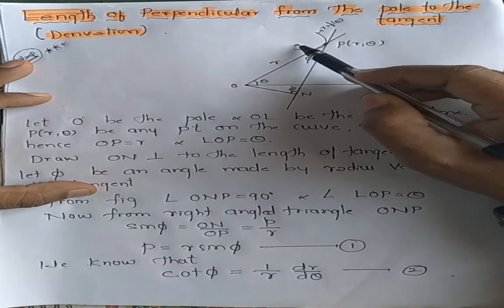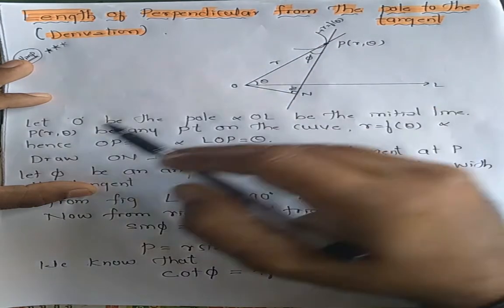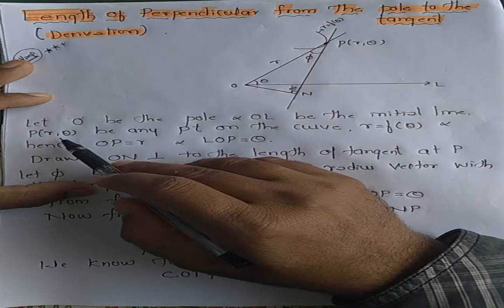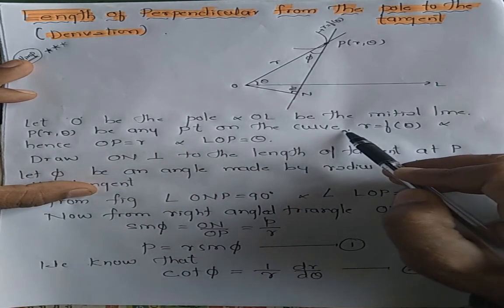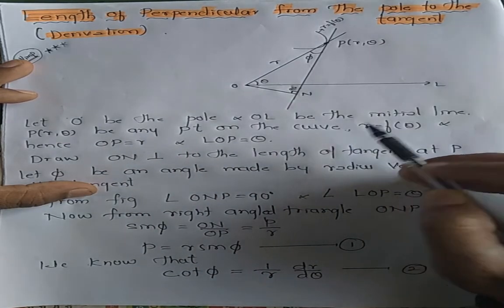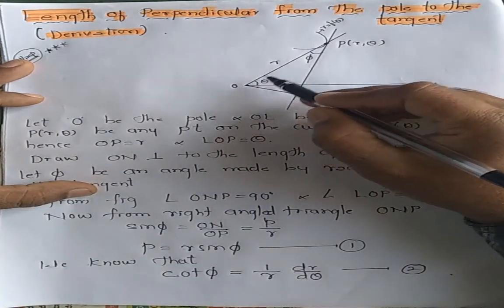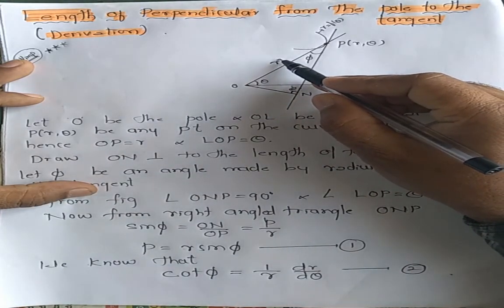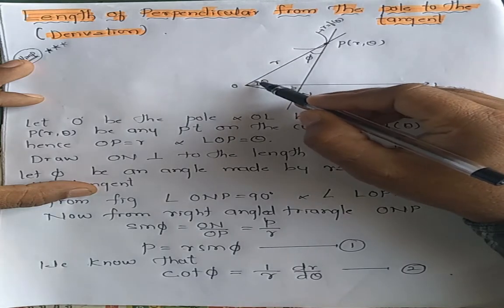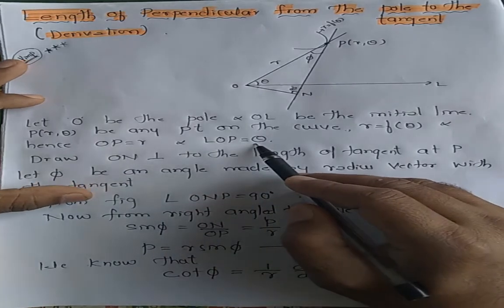On this curve, take a point P(r, θ) as any point on the curve. OP is denoted by the radius vector, and the angle is denoted by the vectorial angle.